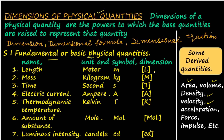Similarly, for area, it is length into breadth, so L raised to 2. Area is represented by its basic quantity length raised to the exponent — that is the power of 2, L raised to 2. That is what this definition says.